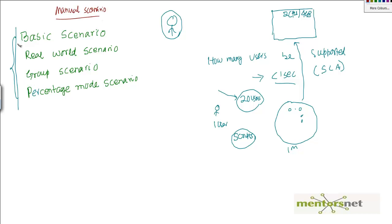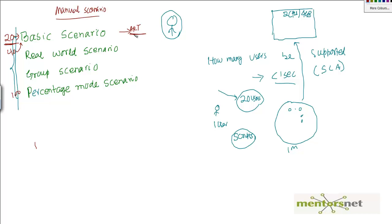In a manual scenario, you run a 20-user, 40-user, or 100-user test and observe the response time or transactions per second. The input is the number of users and the output is the average response time. After looking at the average response time, you decide whether the server can support that load. You might then increase the load to 40 users and run the same scenario again — but this becomes repetitive: 20, 40, 60, and so on.